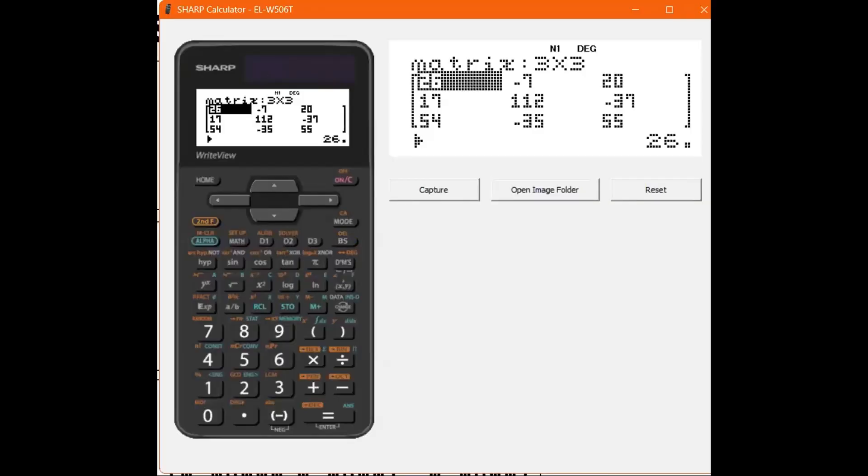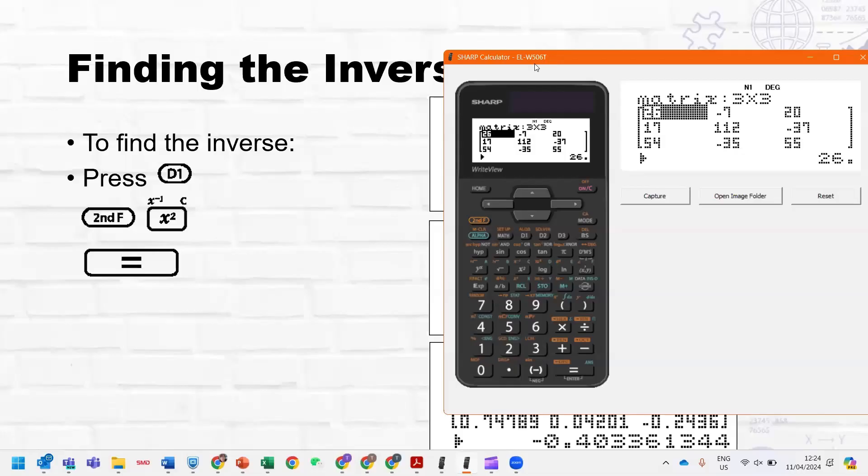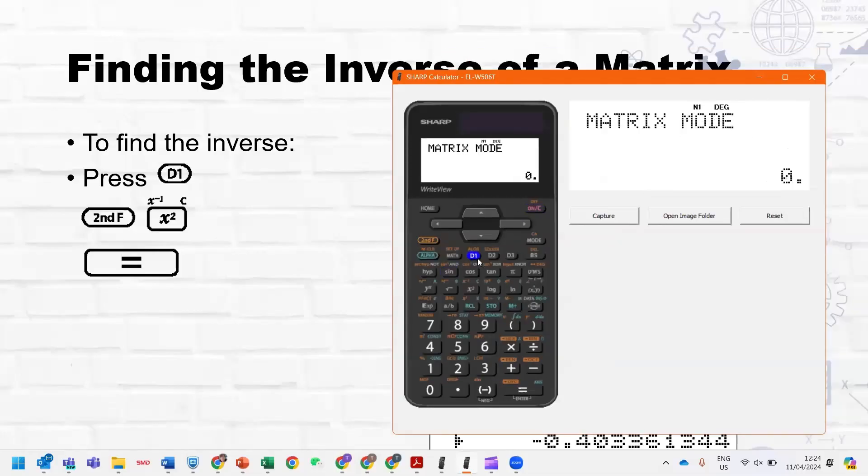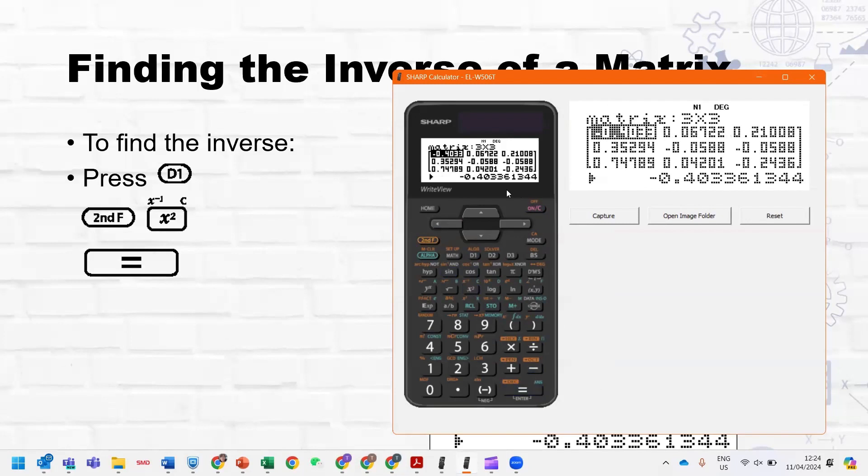Now we want to find the inverse of our matrix. And so what we'll then do is we'll say matrix A, and we'll say second function, and the x squared button, which you'll see above, it says x to the minus one and equals, and it gives us all of our values to nine decimal points.